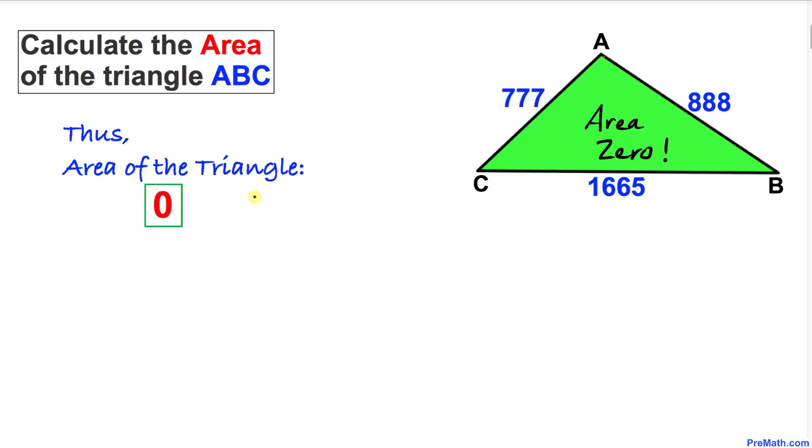Thus we conclude that the area of triangle ABC is zero. Thanks for watching, and please don't forget to subscribe to my channel for more exciting videos.